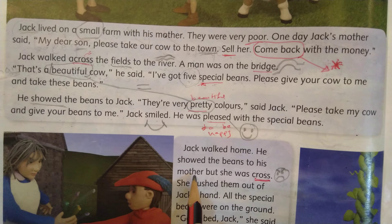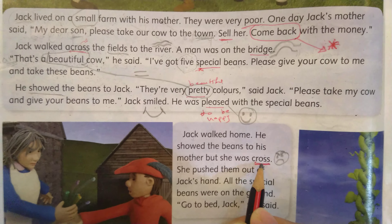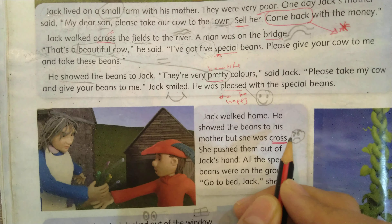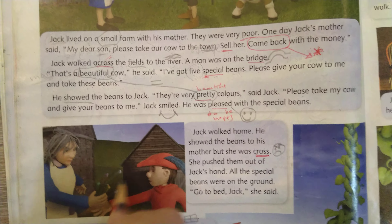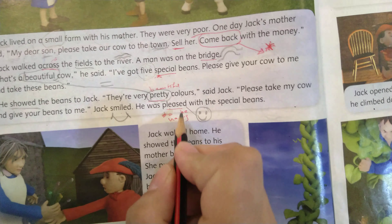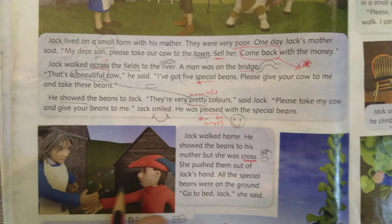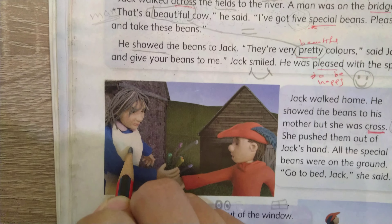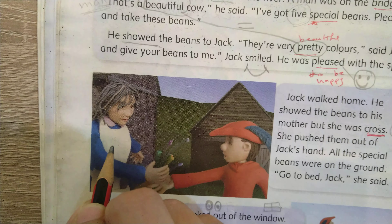What happened to his mother? But she was cross. Cross يعني زعلت عليه، نجنت منه — يعني أنت بعت البقرة وجايب لي هذول الخمس beans. Cross means very angry. هي عكس كلمة pleased — مش حكينا pleased means happy? عكسها cross، زعلان كتير كتير.